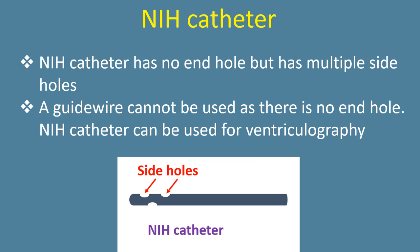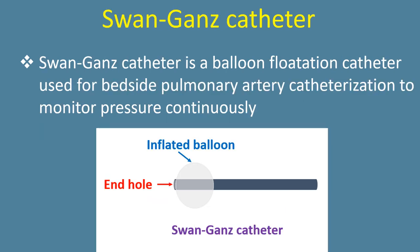The NIH catheter has no end hole but has multiple side holes, so a guide wire cannot be used with it. The NIH catheter can be used for ventriculography.